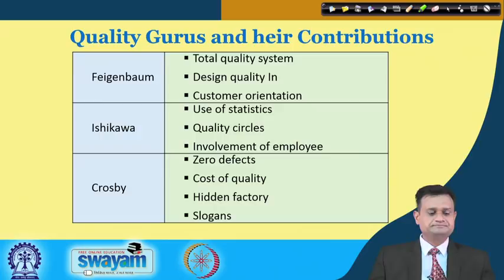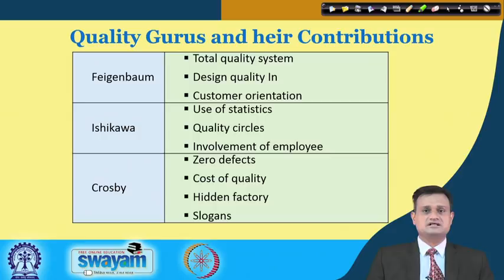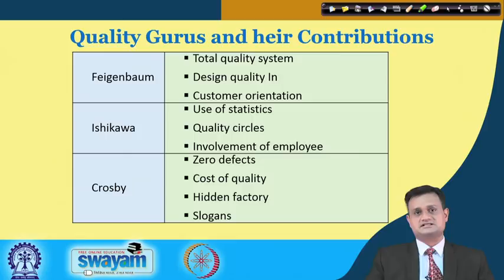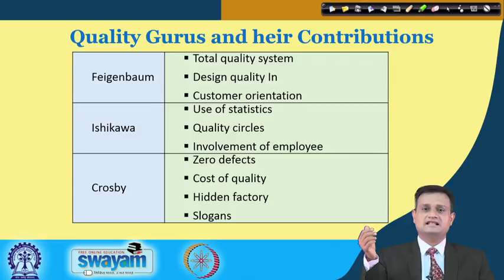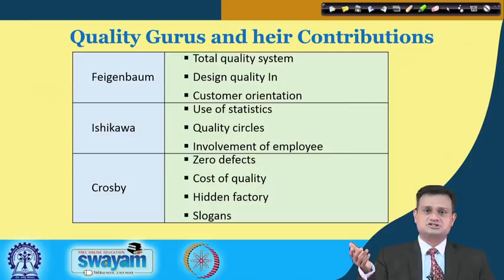Feigenbaum, another quality guru, emphasized the total quality system. He said that whether it is maintenance, production, sales, or marketing, these functions should be seen as a system in totality to achieve the desired quality standard and customer satisfaction. Quality is to be designed right at the concept stage — as you move further from your concept stage, the cost of building quality increases. Customer orientation is a common part in all TQM philosophy.